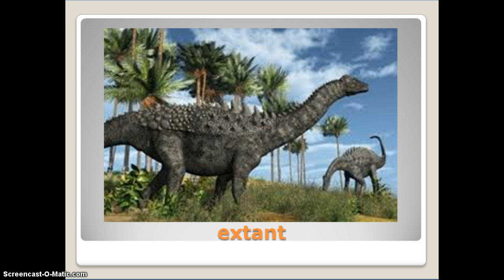Next one: extant. Extant is an adjective; first syllable is accented. It means still existing — not exterminated, destroyed, or lost. These dinosaurs, unfortunately, are not extant; they do not exist anymore. So extant means it exists. If you were to find on some remote island that dinosaurs are still around, then they would be extant. But as far as we know, they are not. Synonym is surviving; antonym is extinct.